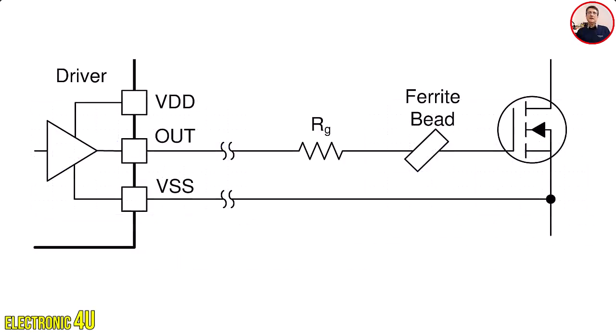Using a ferrite bead on the gate of the power switch is recommended to improve the reliability of the drive circuit, particularly when switching a noisy FET, for example a FET with fast rise time or a low internal gate resistance. Ferrite beads can be used in series with gate resistor to gain the most benefit, as shown in this picture, and should be placed as close to the FET as possible.